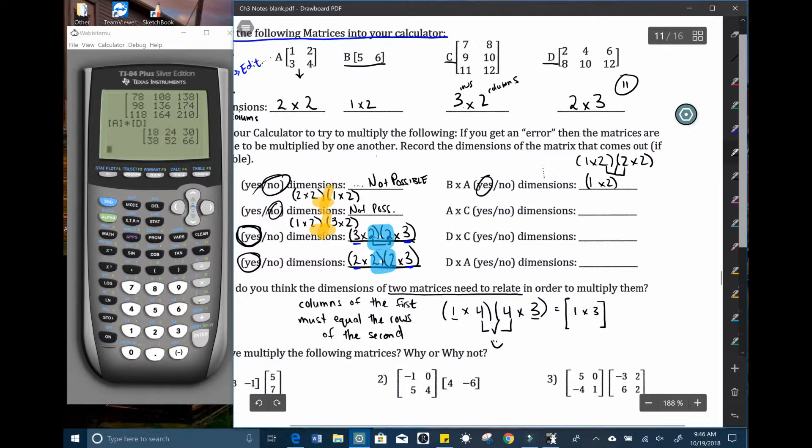A times C, A times C, that's going to be a two by two times a three by two. Any guesses? It's not going to work.